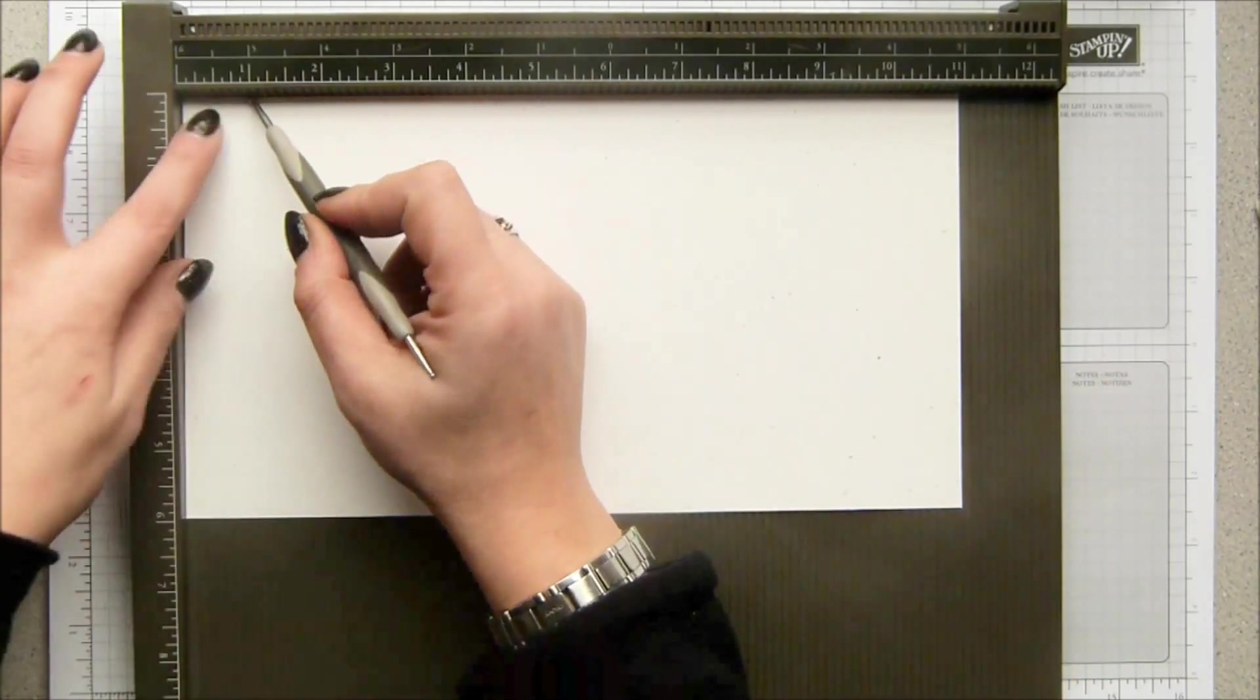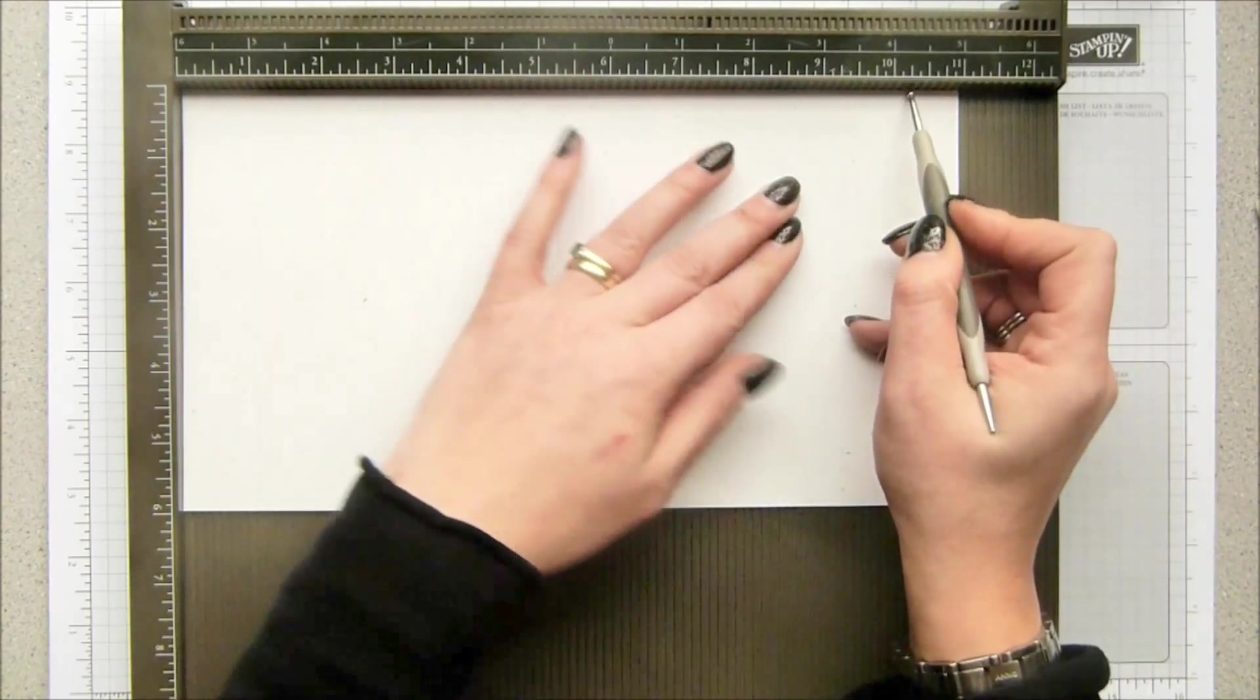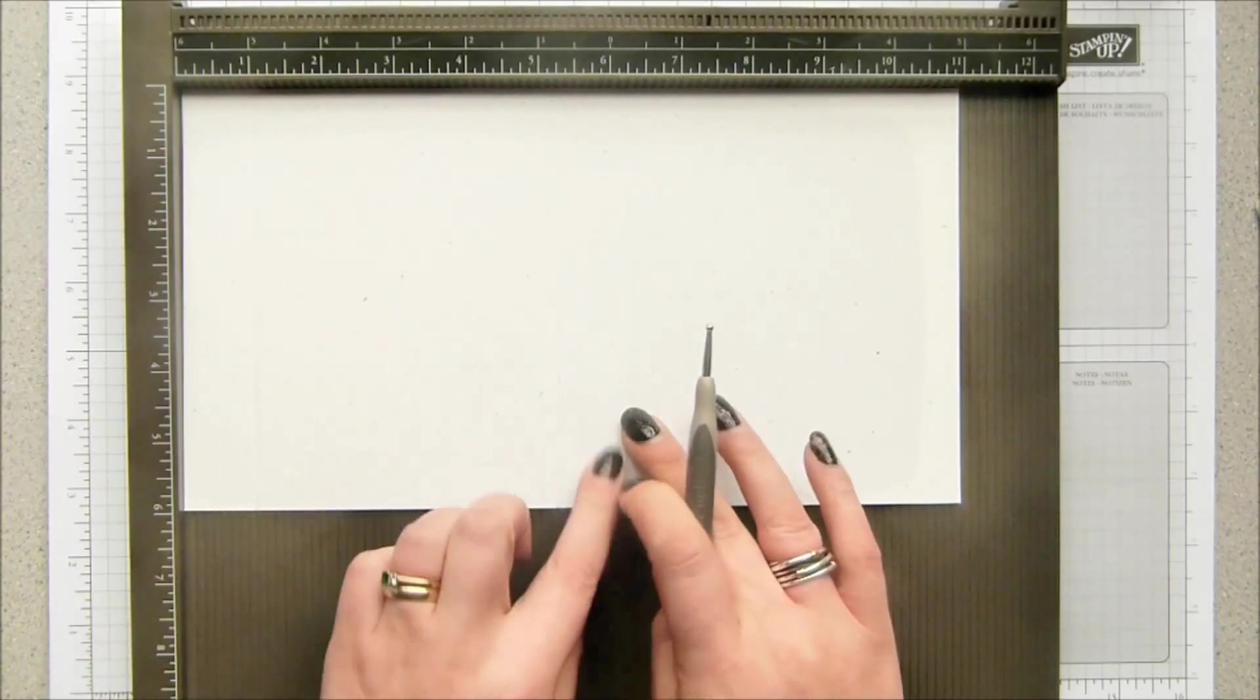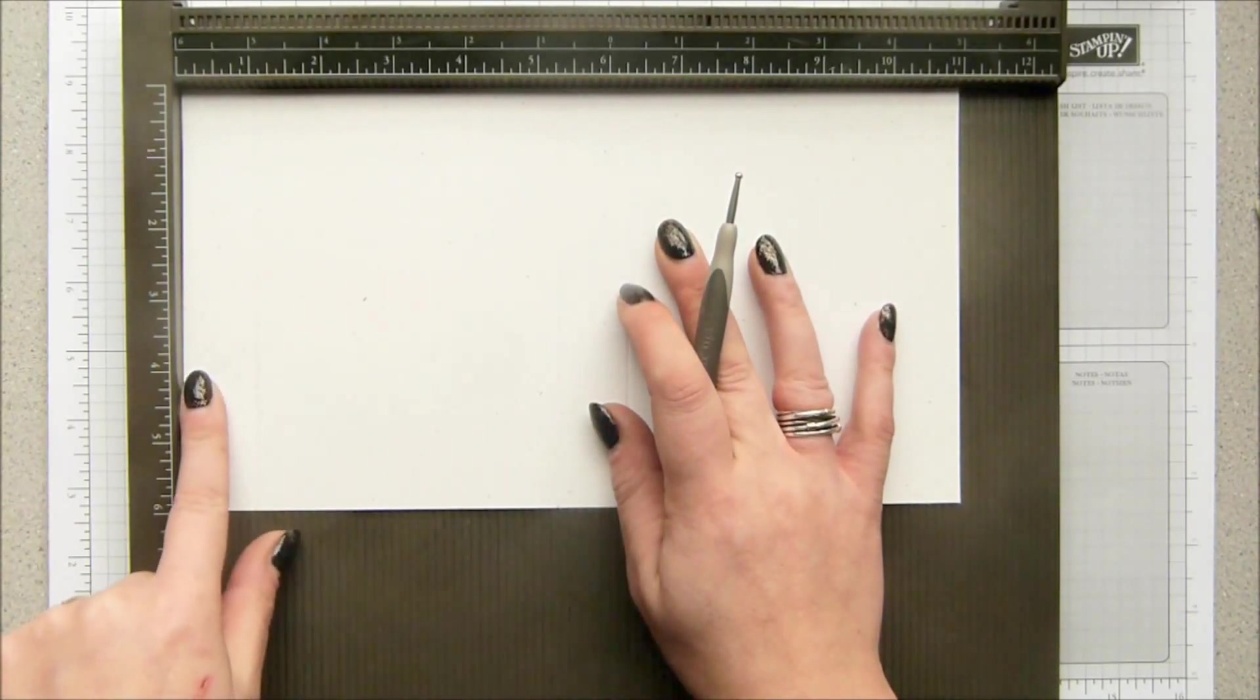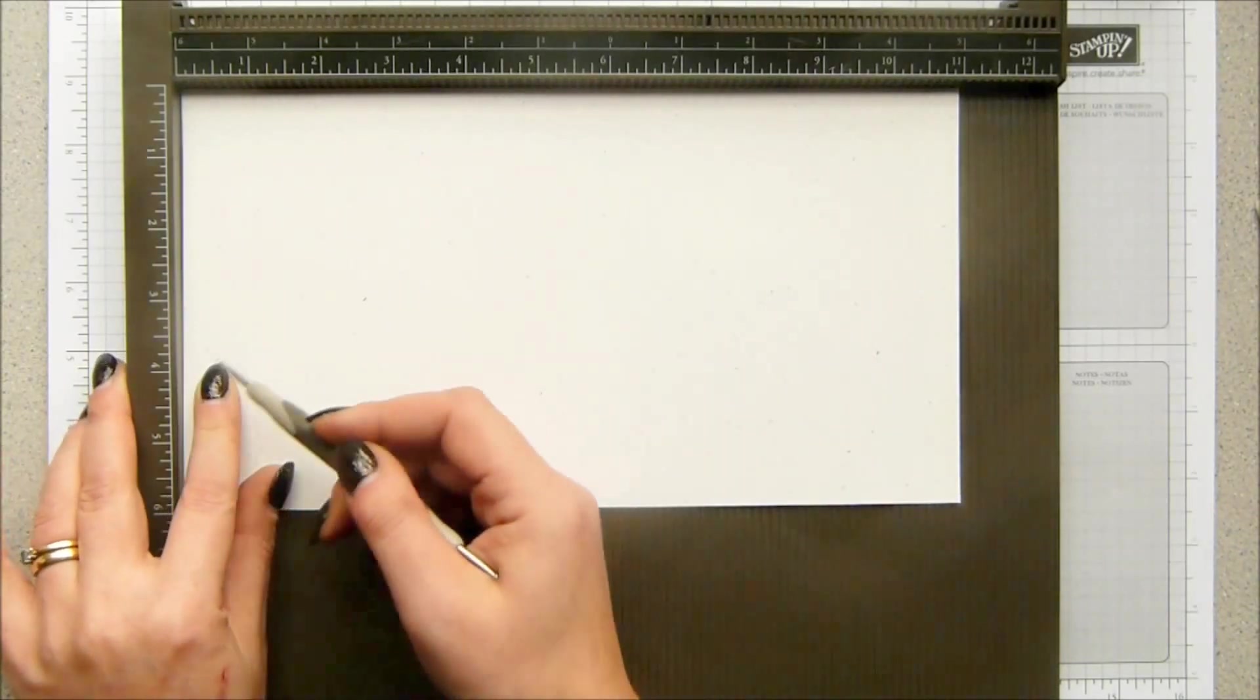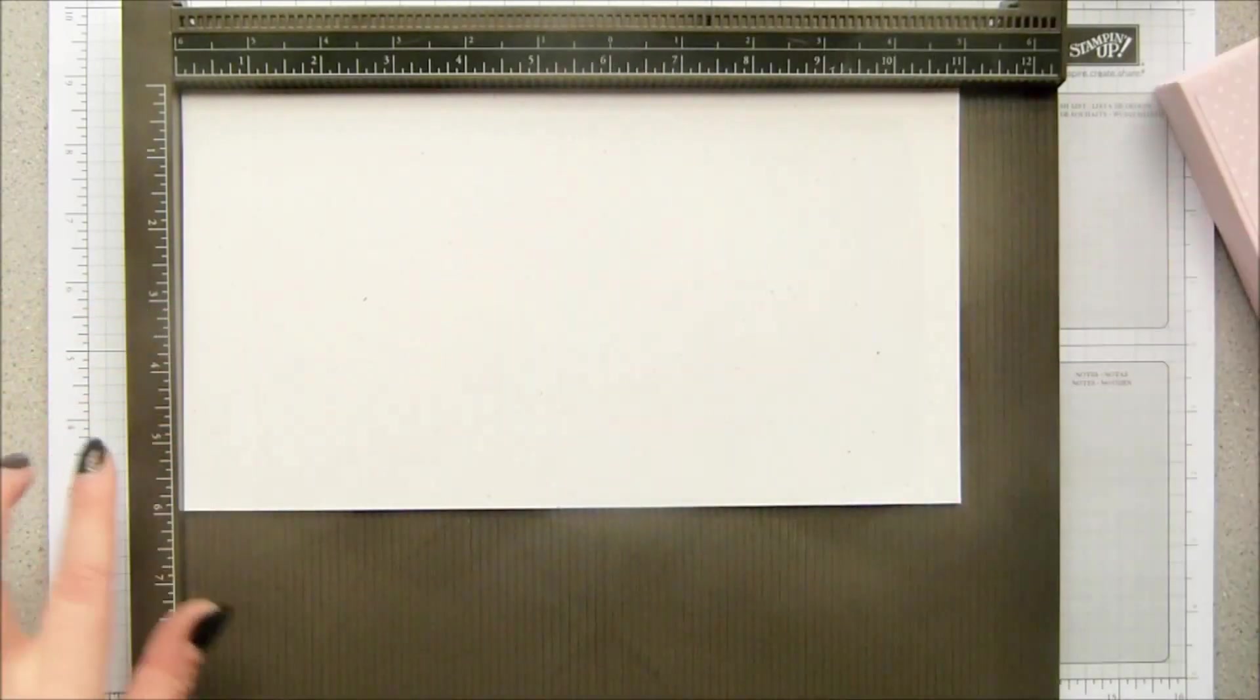With the long side at the top, you score at one inch, five and a quarter inches, six and a quarter, and ten and a half inches, which in metric is two and a half, thirteen and a half, sixteen, and twenty-seven centimeters. Now you need to keep this at the top—put your finger at the four inch mark because we're going to score only part way down the sides.